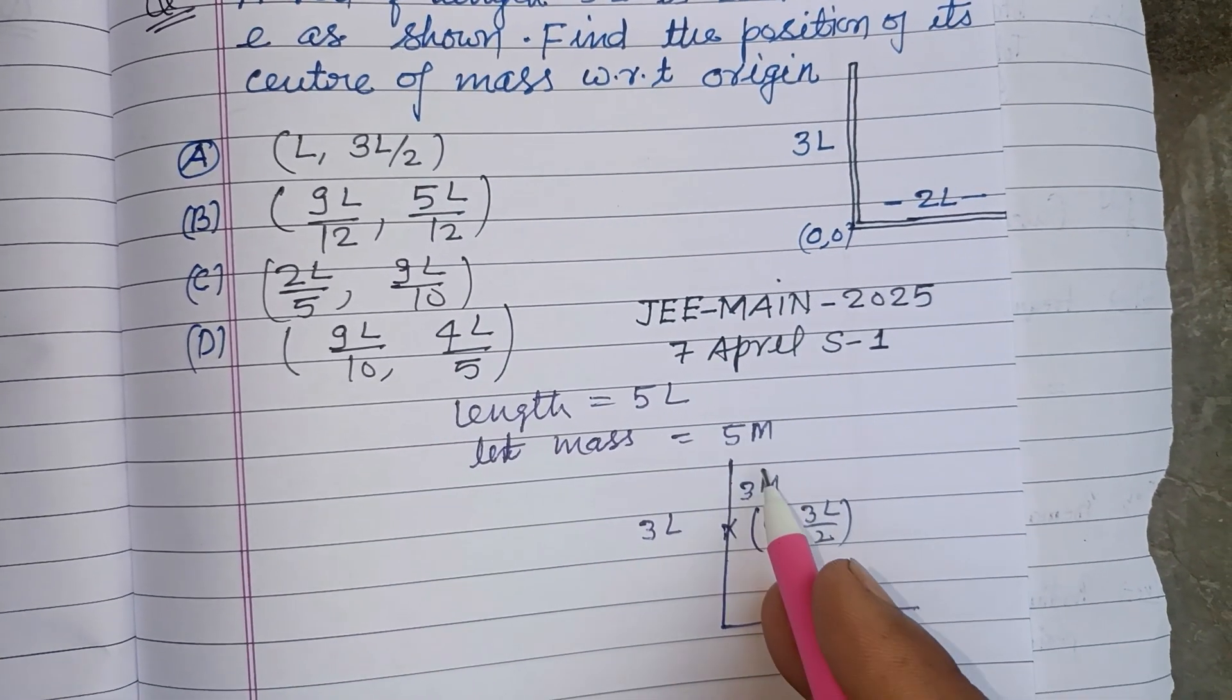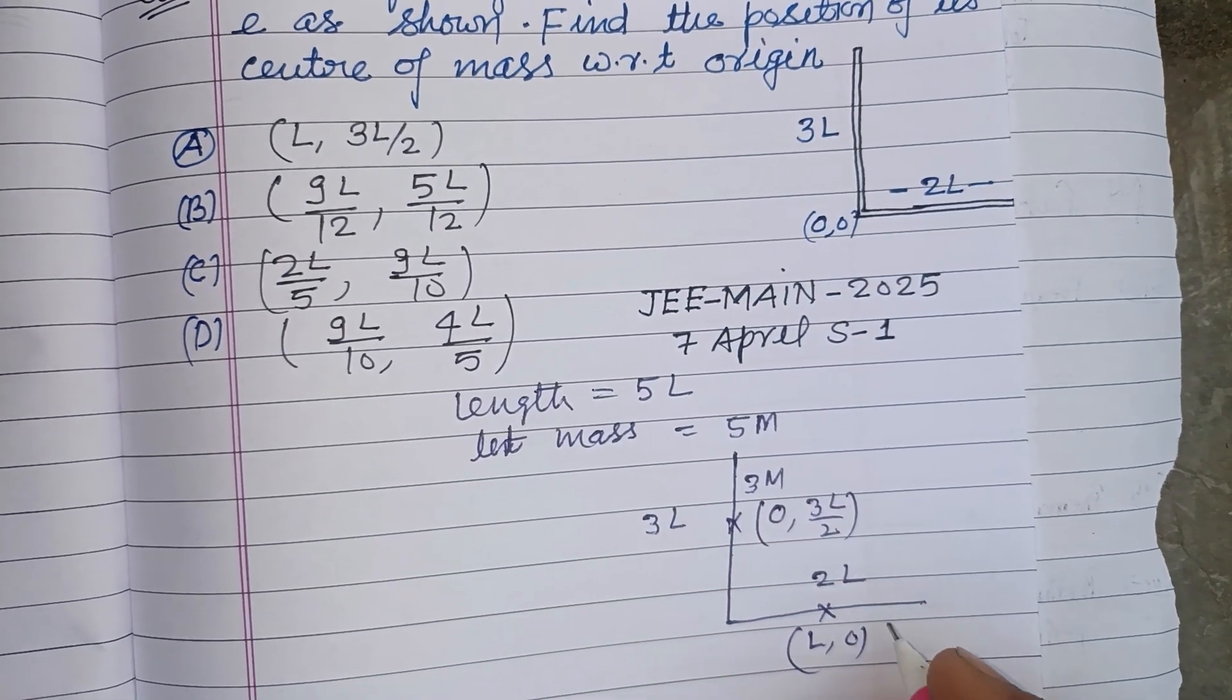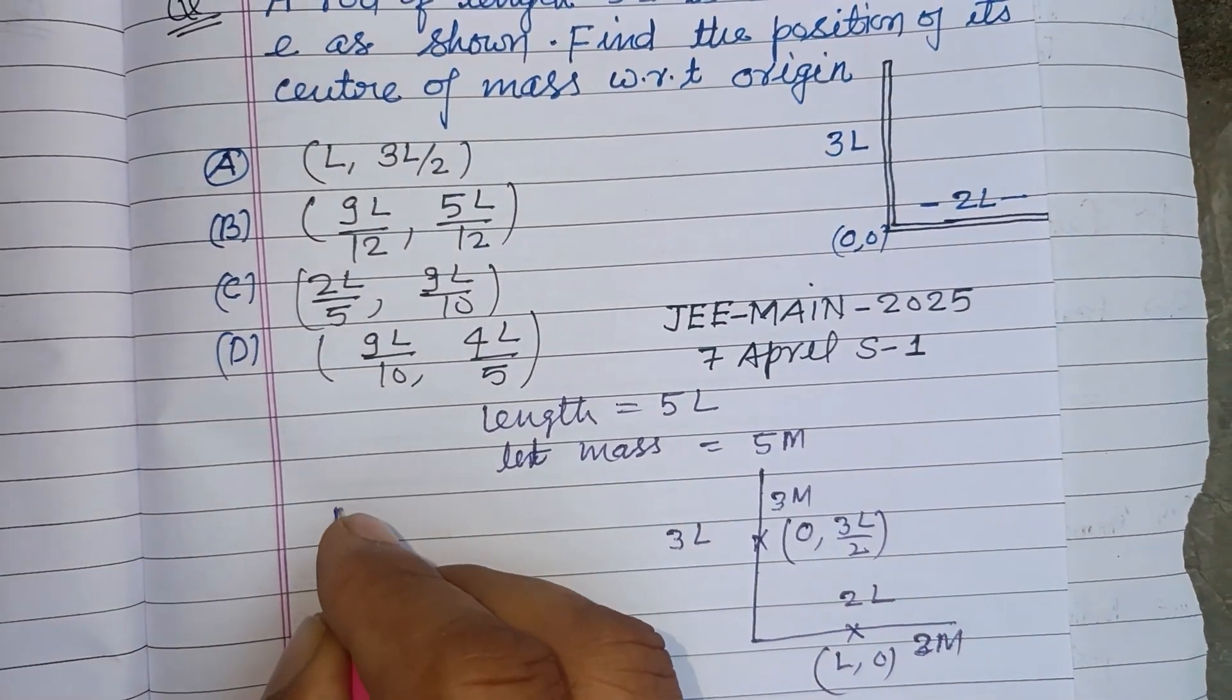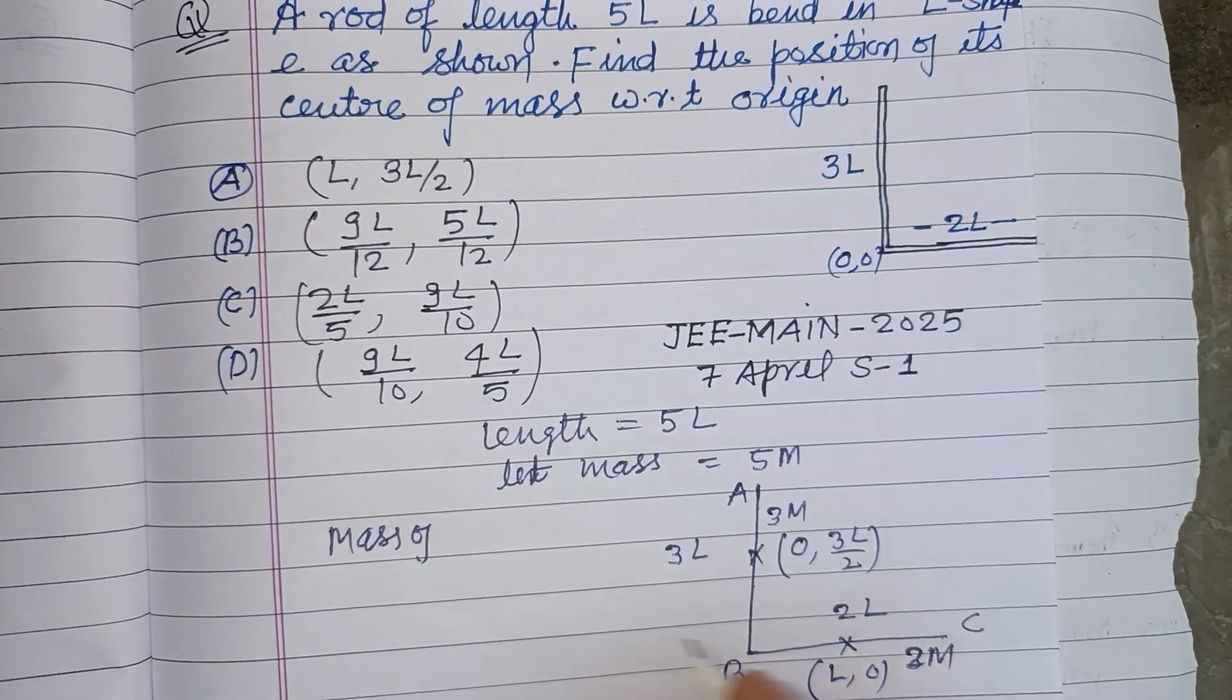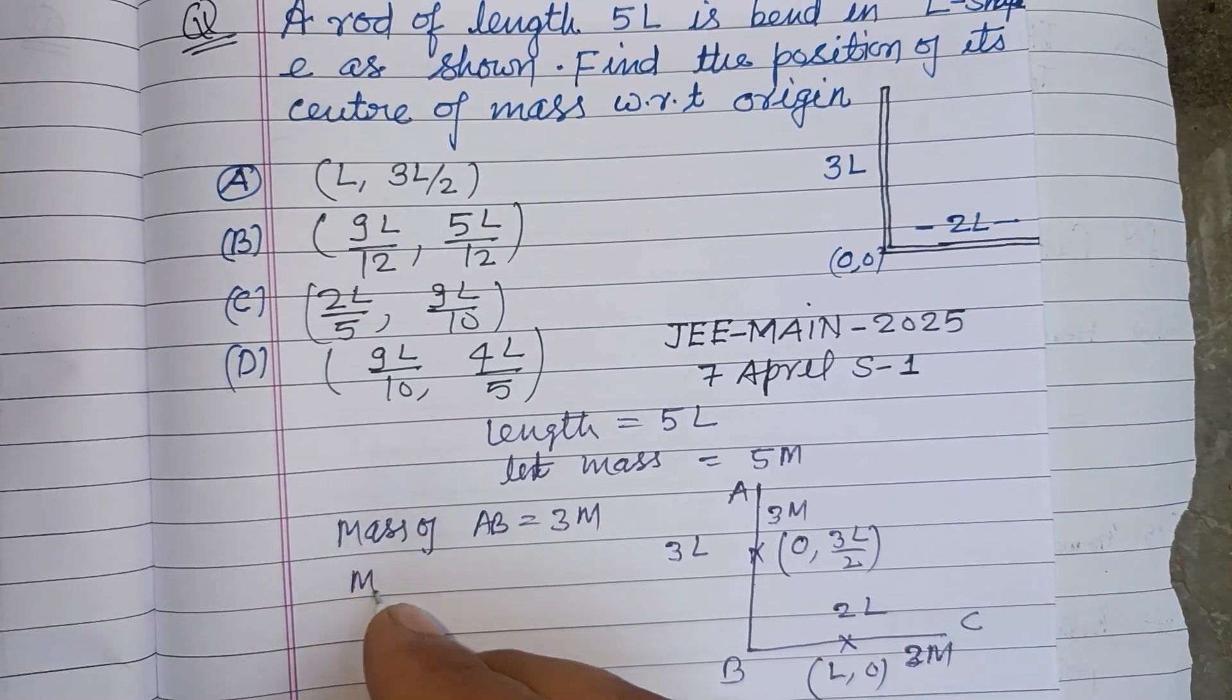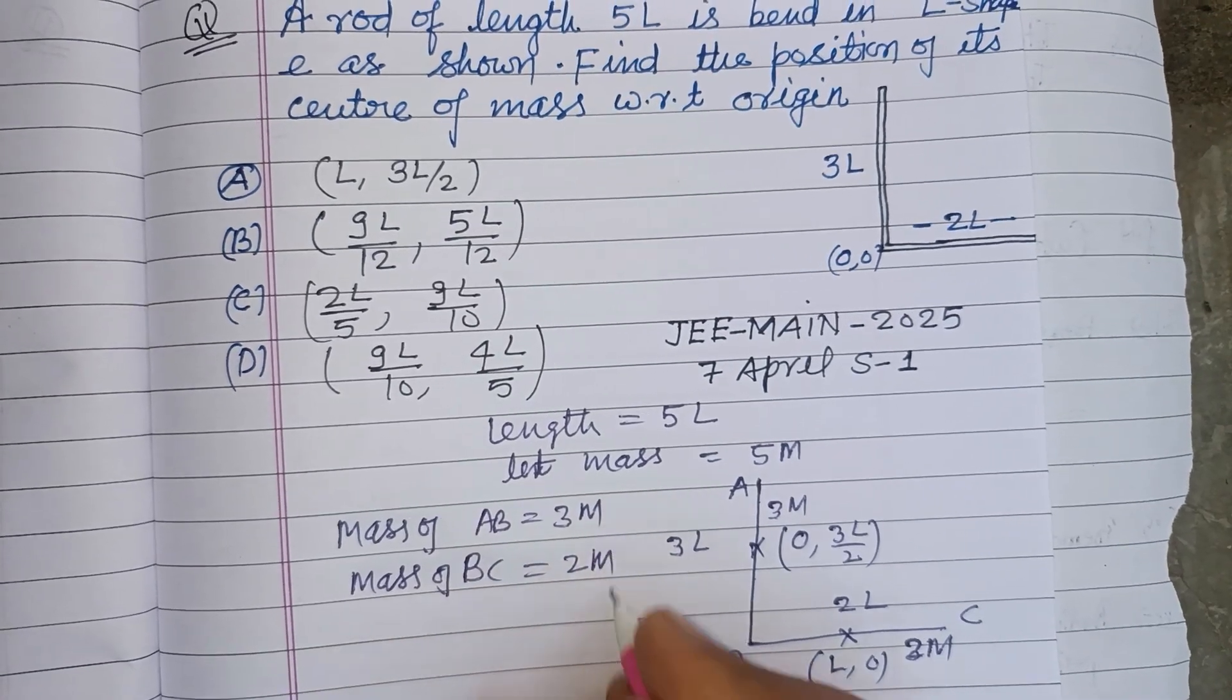And its mass is 2M. So mass of, let this part is ABC, mass of AB equals 3M, mass of BC equals 2M.